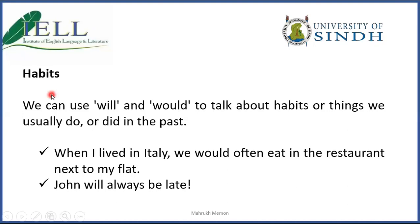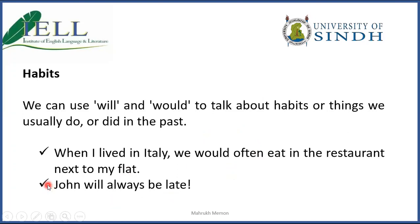For habits, we also use modal verbs like 'will' and 'would' to talk about habits or things we usually do, used to do, or did in the past. 'When I lived in Italy, we would often eat in the restaurant next to my flat' — talking about a past habit using 'would.' 'John will always be late' — it's always there, just a habit. So we use 'will' and 'would' to show habits.